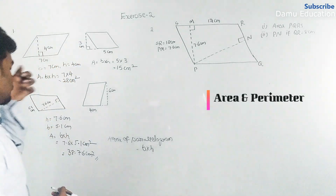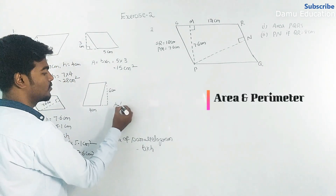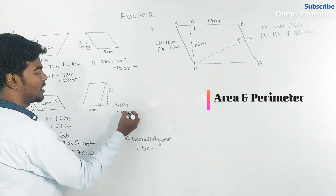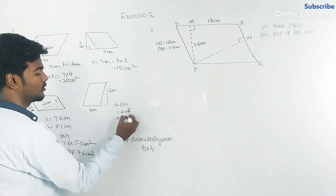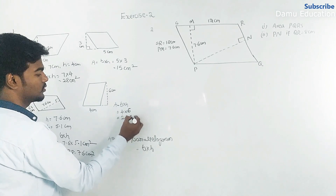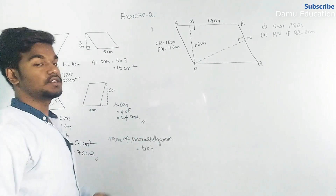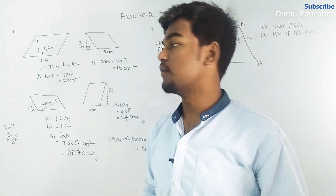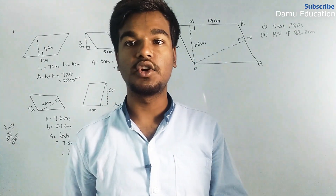For the fourth one, base is four centimeters and height is six centimeters. Area equals base into height, which gives 24 centimeters square.